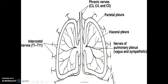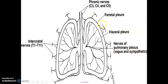From this diagram you can appreciate the phrenic nerve coming to innervate the medial or mediastinal surface of the pleura, and the intercostal nerve innervating the costal surfaces of the pleura. The phrenic nerve also innervates the diaphragmatic surfaces. All these — phrenic nerve and intercostal nerves — are innervating the parietal pleura. The visceral pleura is mainly innervated by autonomic nerves: vagus and sympathetic nerves.